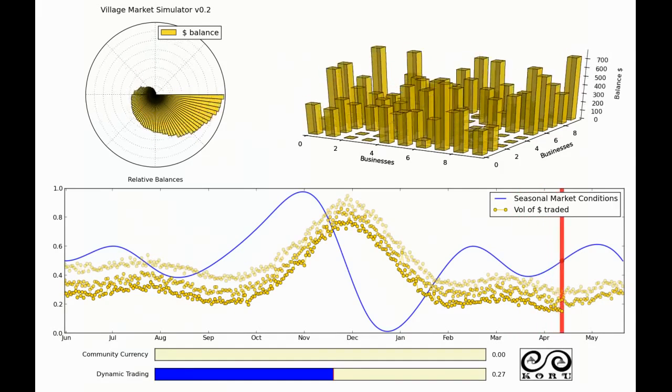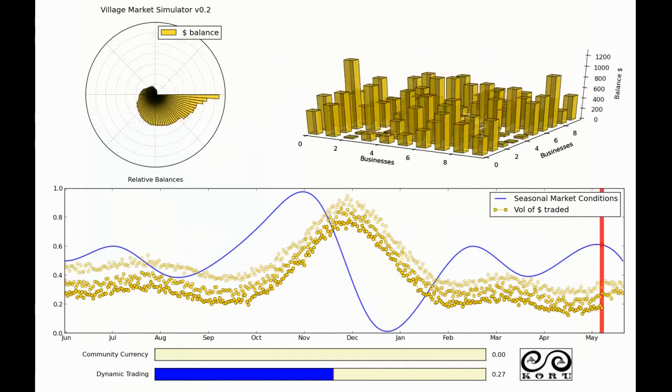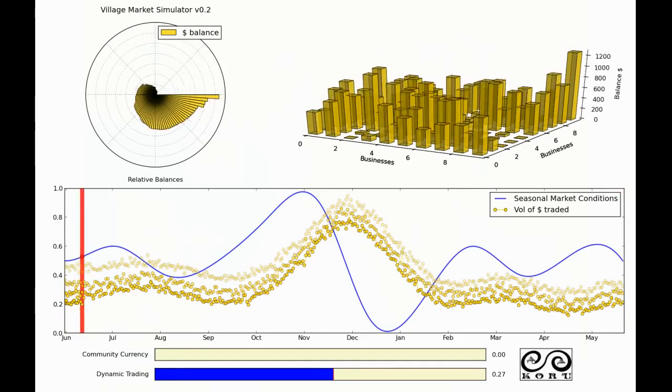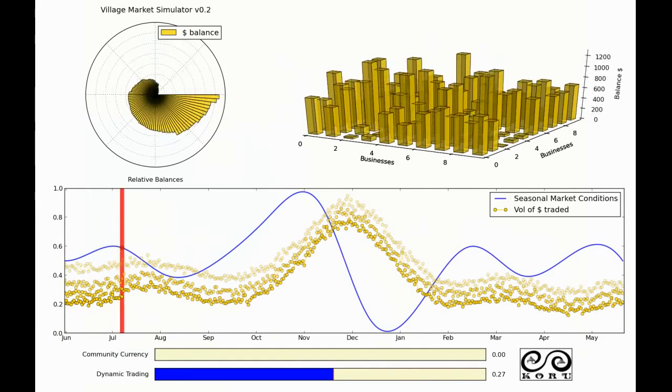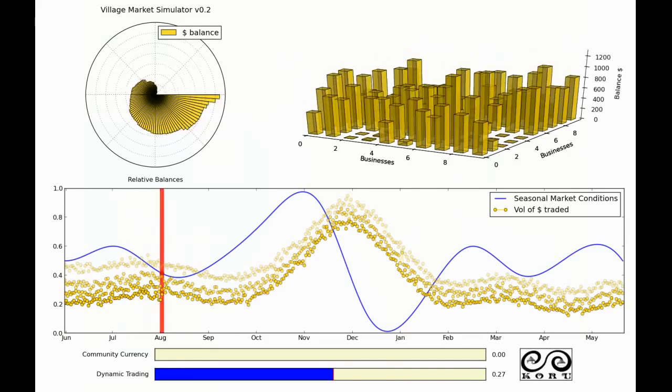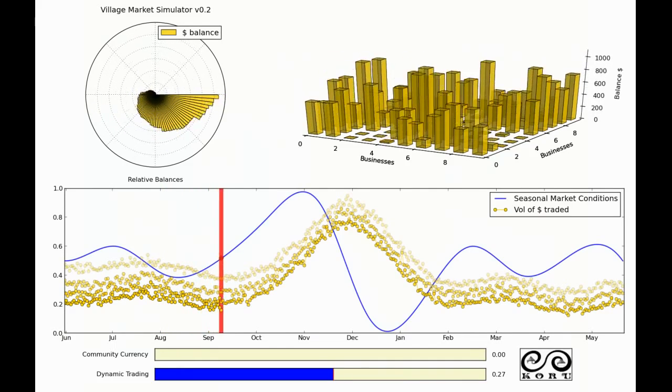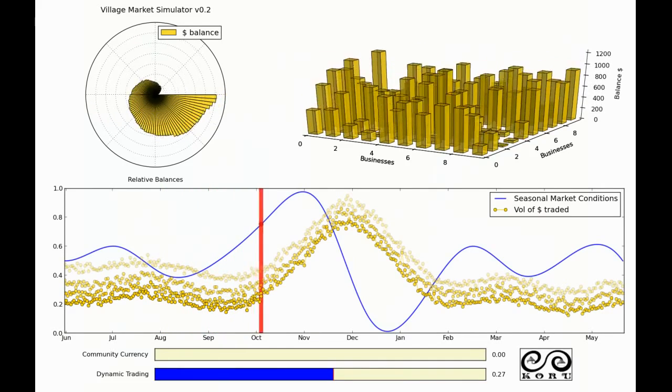So as we start the next year we see it follows the same pattern. There's a little bit of oscillation then a big oscillation up in December and then a big crash in January. And again each year a little bit of money starts leaving the system.